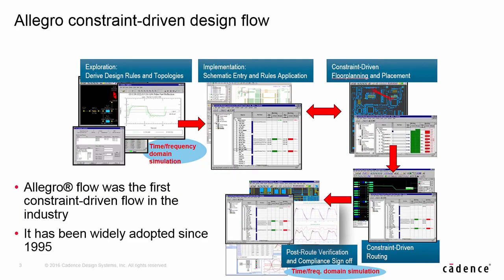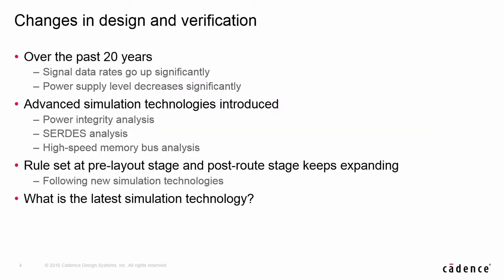Let's go back to see how the sign-off flow evolved. The flow is basically constraint-driven without integration with the layout environment. It originated from the first industry constraint-driven flow — the Allegro constraint-driven flow, which was introduced to designers in 1995. The constraint-driven flow first contained only rules to prevent problems with SI and EMI. Over the past 20 years, as technology advanced, signal rates went up and power supply levels went down, and new simulation methodologies were introduced, like PI analysis, 3DS analysis, and high-speed memory bus simulations. More rules were introduced, for example, decoupling capacitor placement rules for PI applications and differential signal rules for serial link designs.